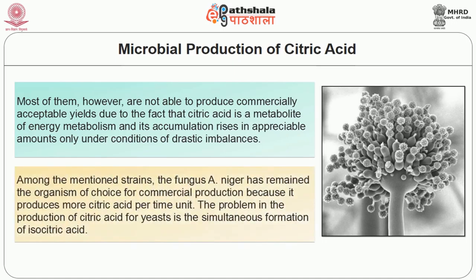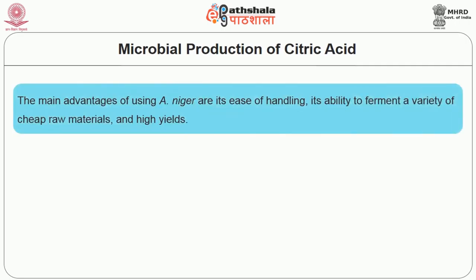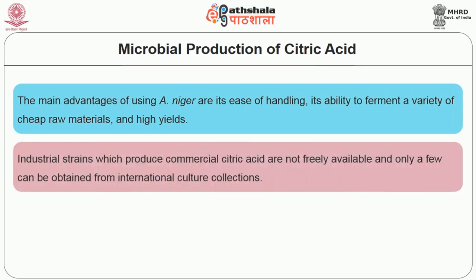Among the mentioned strains, the fungus Aspergillus niger has remained the organism of choice for commercial production because it produces more citric acid per unit time. The problem in citric acid production from yeast is the simultaneous formation of isocitric acid. The main advantages of using Aspergillus niger are its ease of handling, its ability to ferment a variety of cheap raw materials, and high yields. Industrial strains which produce commercial citric acid are not freely available and only a few can be obtained from international culture collections.